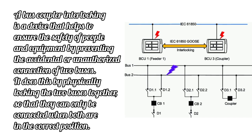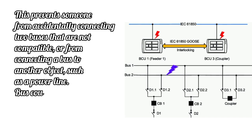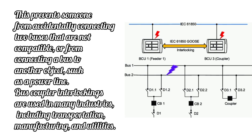It does this by physically locking the two buses together so that they can only be connected when both are in the correct position. This prevents someone from accidentally connecting buses that are not compatible or from connecting a bus to another object, such as a power line.